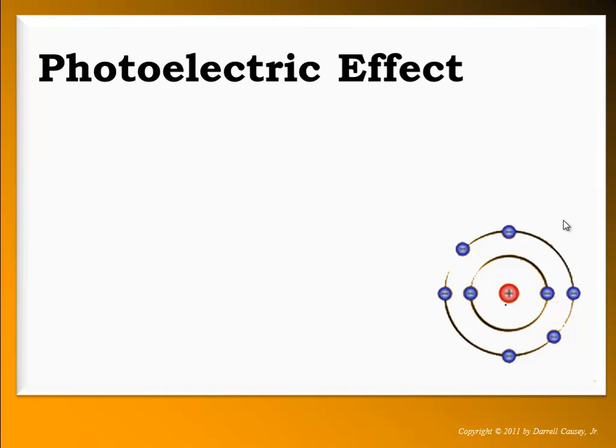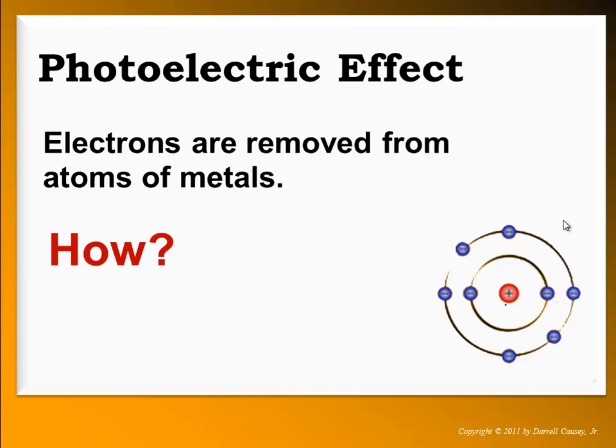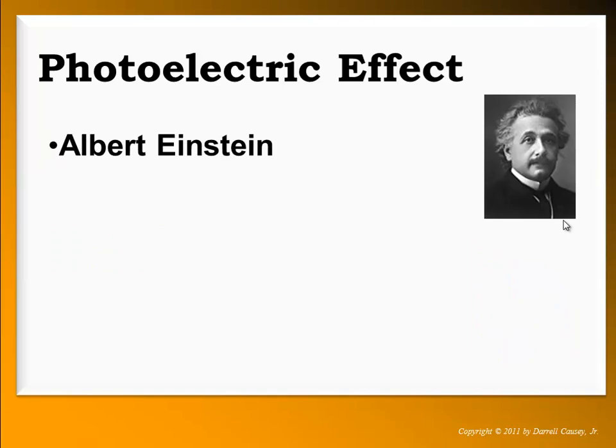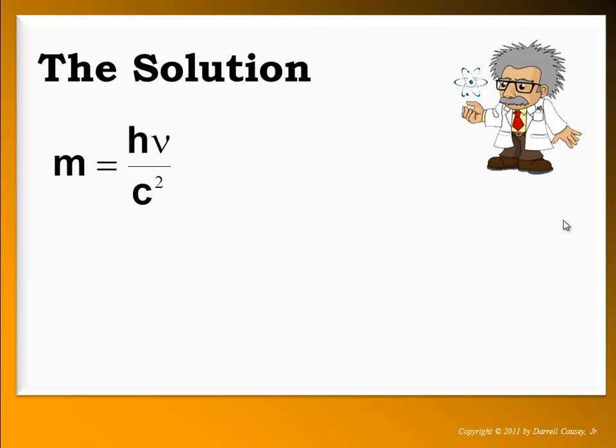However, when Planck put forth his equation, a young man by the name of Albert Einstein came about and answered the question of how the photoelectric effect could be as such. Albert Einstein suggested or used Planck's idea to solve the photoelectric effect. And he used Planck's constant. The solution was mass equals h times frequency over light squared. Or mass equals Planck's constant over lambda times the speed of light.